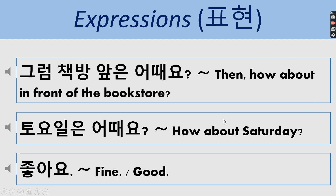You are now trying to agree on a place to meet. 그럼 책방 앞은 어때요? 그럼 is 'then.' 책방 means bookstore. 앞 means front. 어때요 is used as a suggestion. So 그럼 책방 앞은 어때요? means 'Then how about in front of the bookstore?'